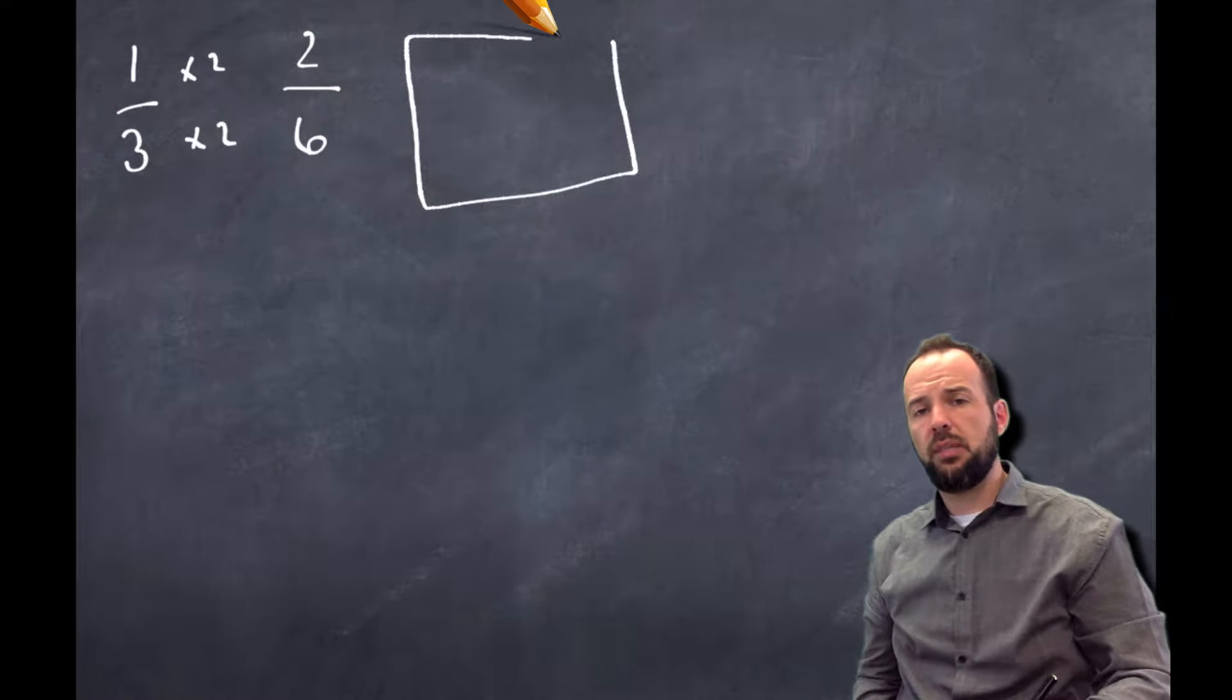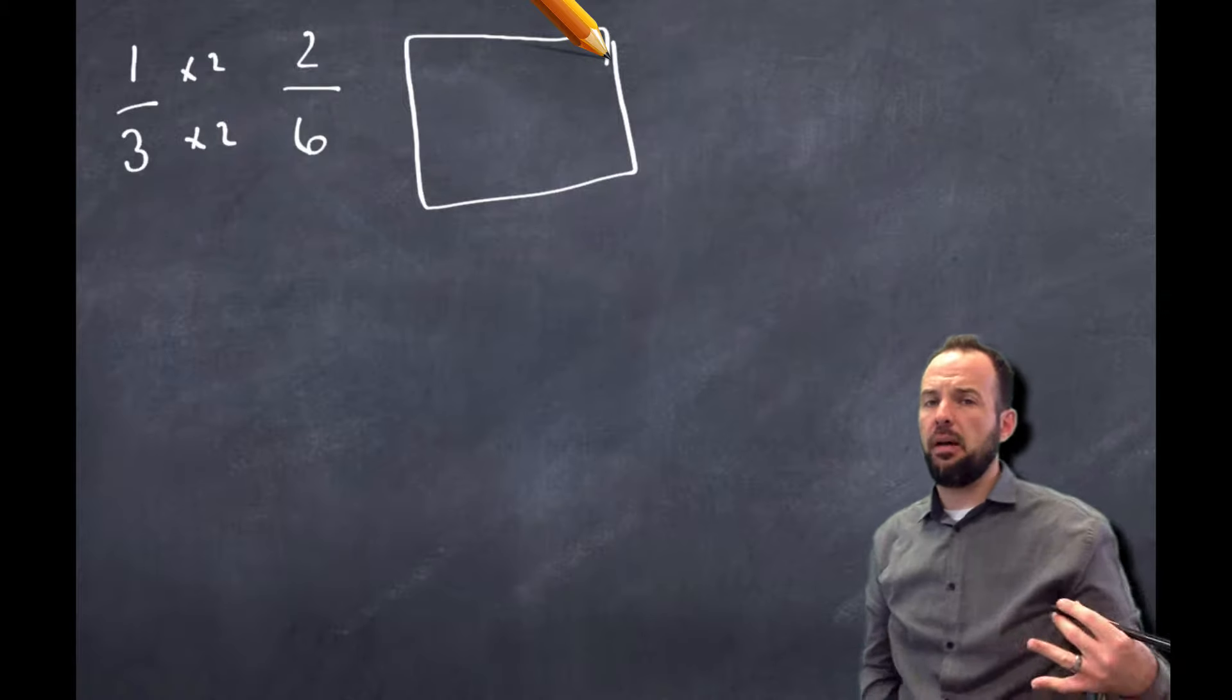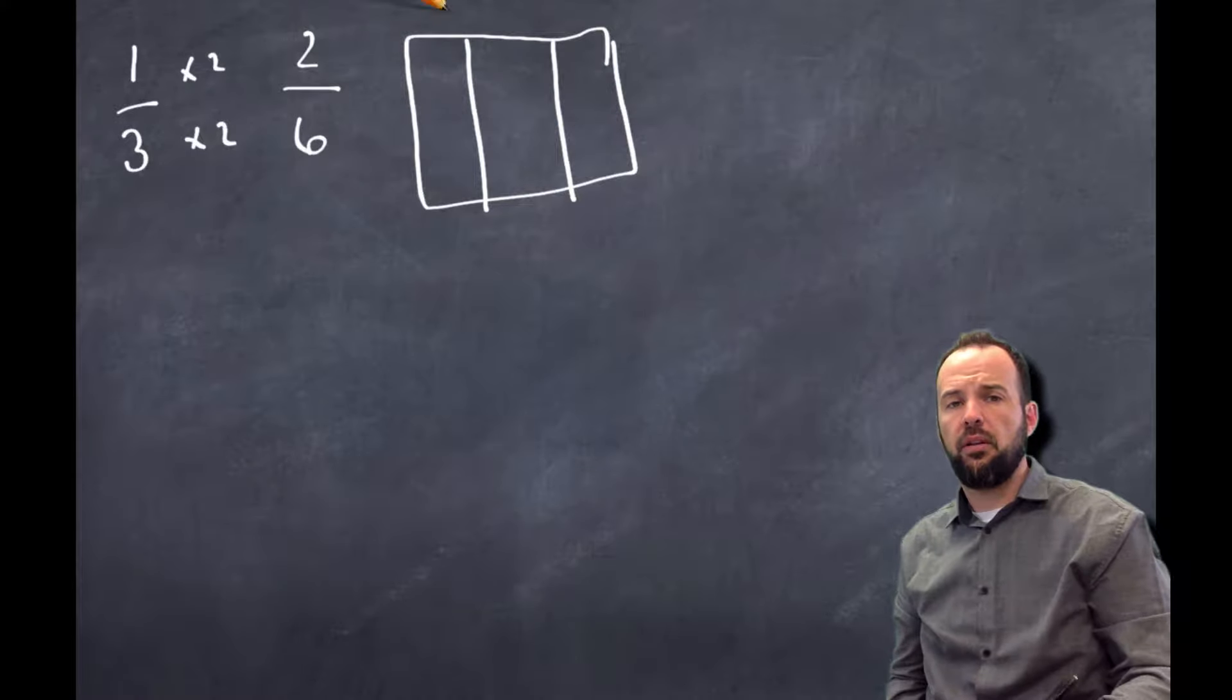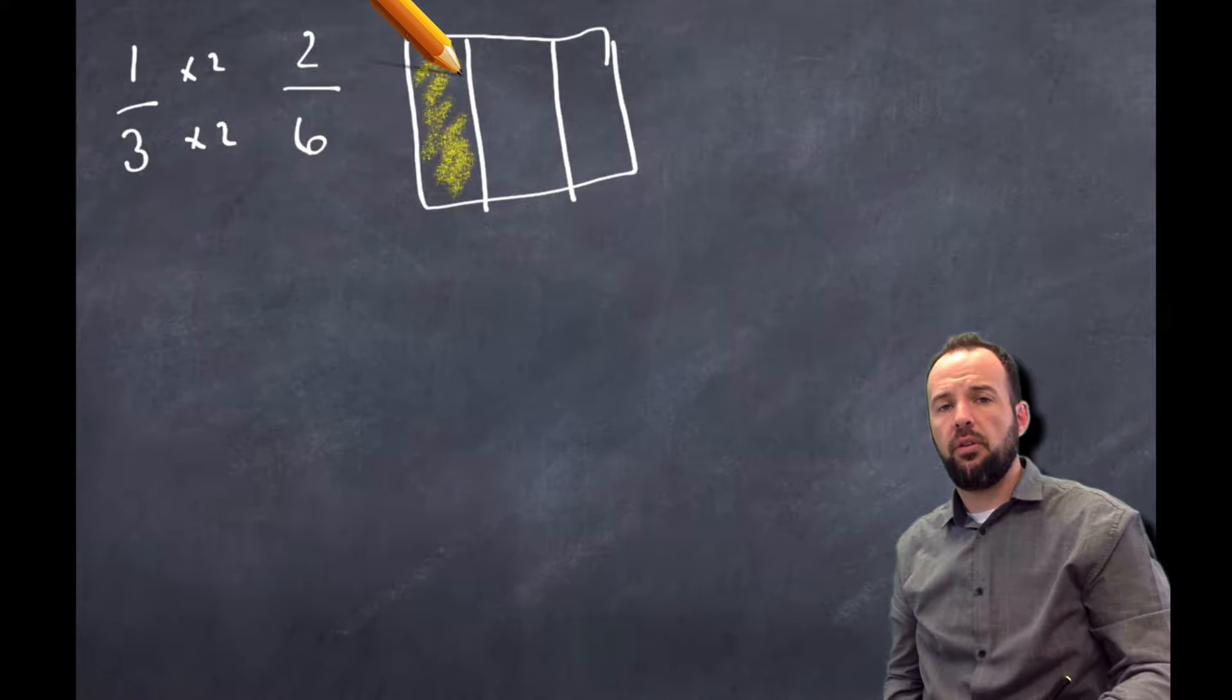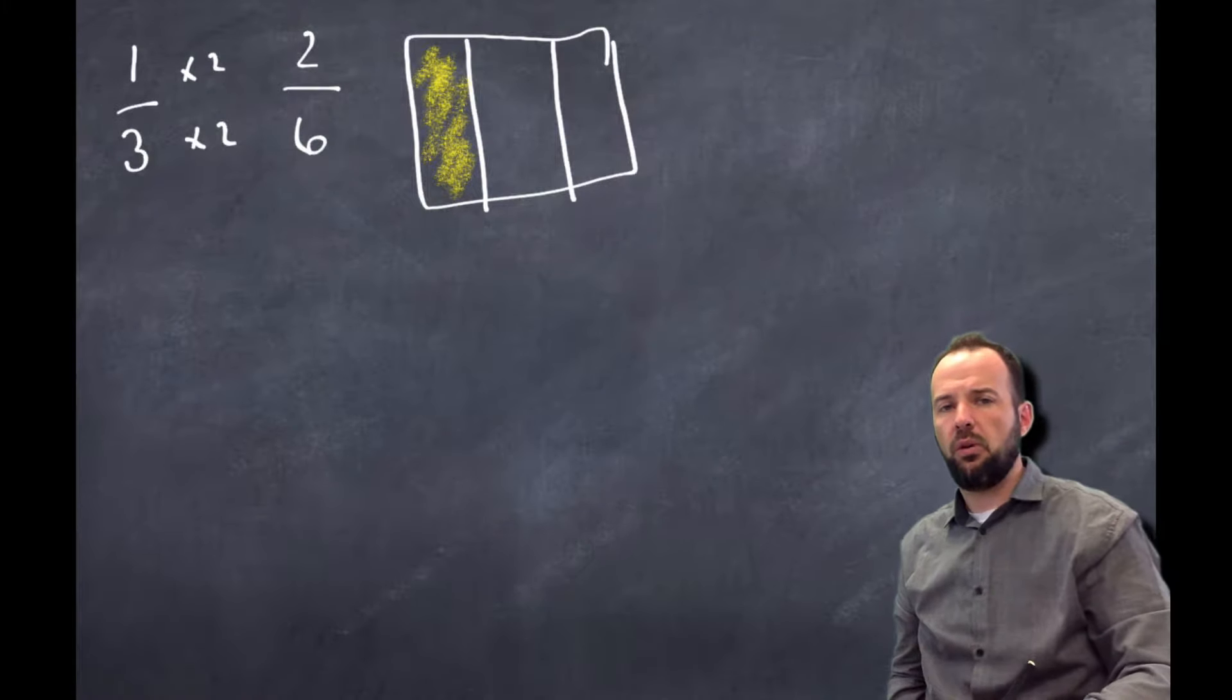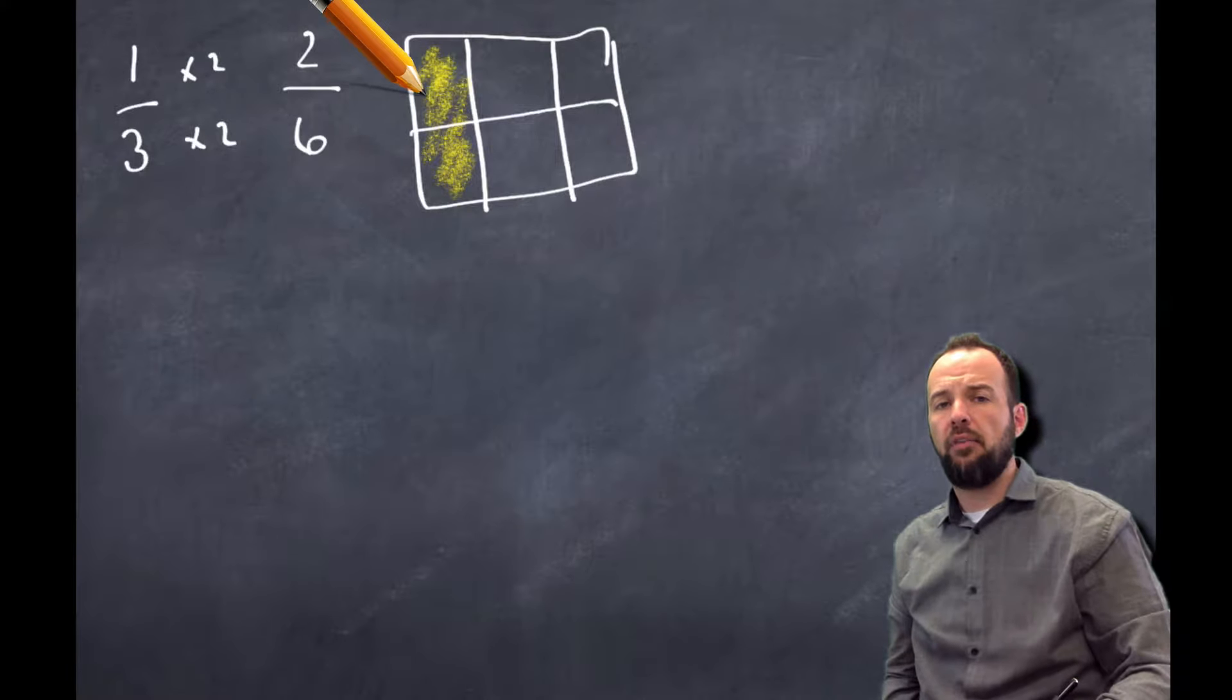And we reasoned this is true because when we were using the area model, right, to kind of illustrate this, if I had thirds to start and I had one third, right, one third, and then I made twice as many units or I divided it here and decomposed it into two...